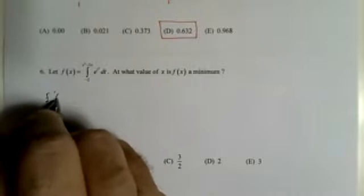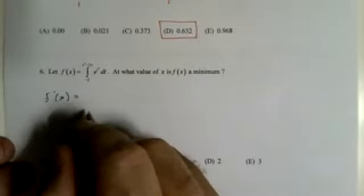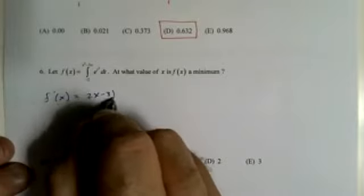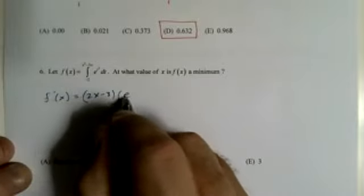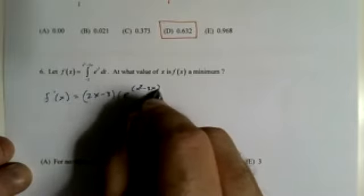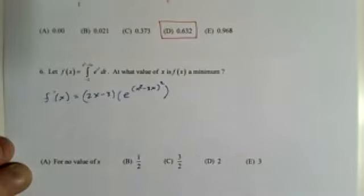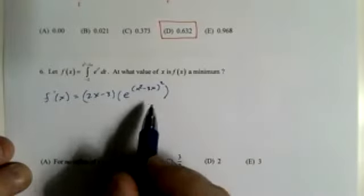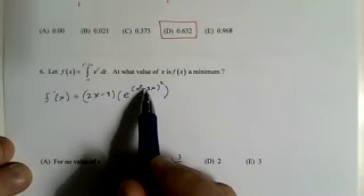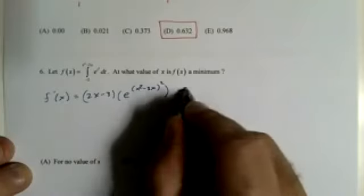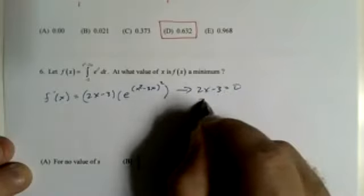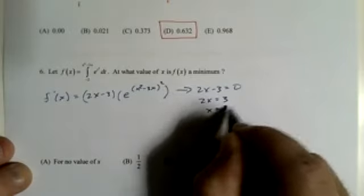Let f of x equal all this nonsense. At what value is this a minimum? Well, we take the derivative. How am I going to possibly take the derivative of that? That's why we get paid the big bucks in this class. So, chain rule. 2x minus 3. e to the x squared minus 3x squared. That's the derivative. Set equal to 0. e is never going to be 0. Ever. So, 2x minus 3 equals 0. 2x equals 3. x equals 3 halves.